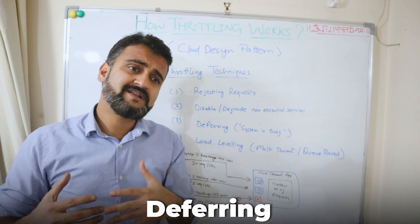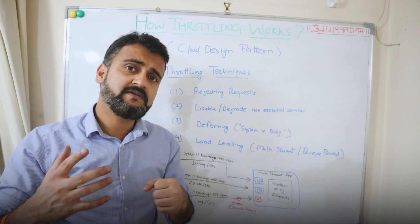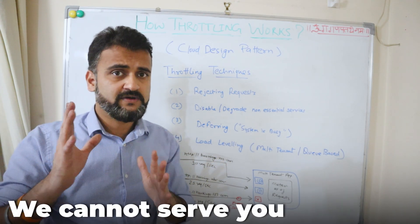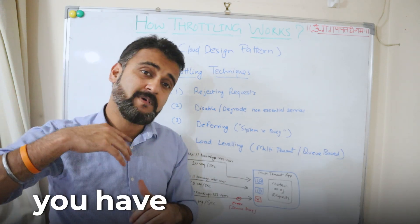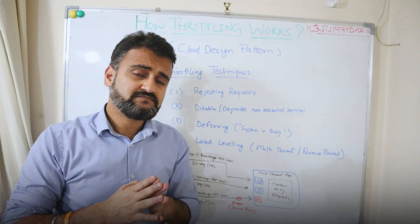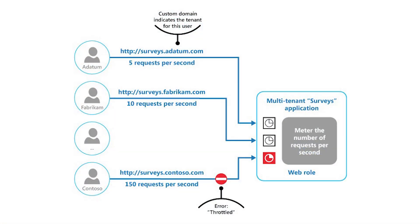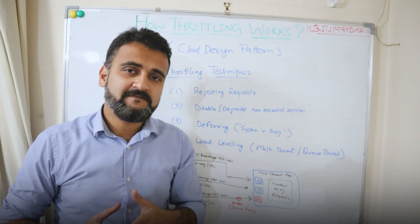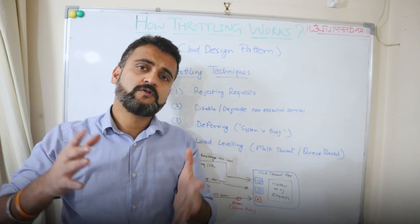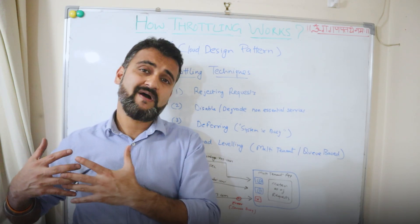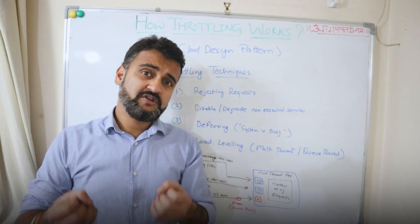The third technique is deferring. If there are requests coming at a very fast pace from a system, you could throw an error telling that system that we cannot serve you because you have passed your quota of requests. In every cloud environment there is an API request quota given to you based on your license, and if you exceed that you get an error. From my experience, we started facing API failures from Google Cloud when there was a huge influx of requests on Google BigQuery — the moment we crossed our quota, we started getting failures. That's one way of protecting the shared environment for everyone.